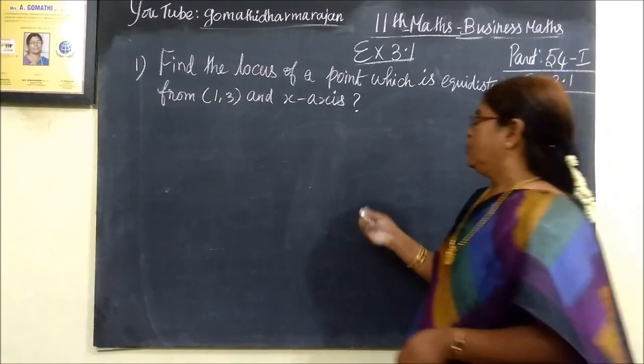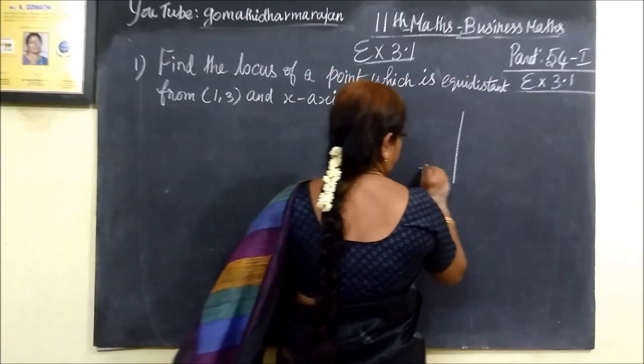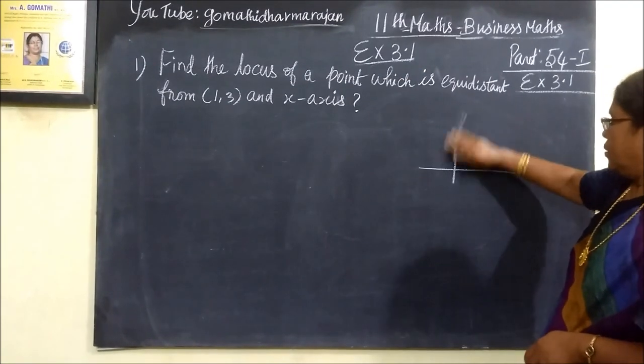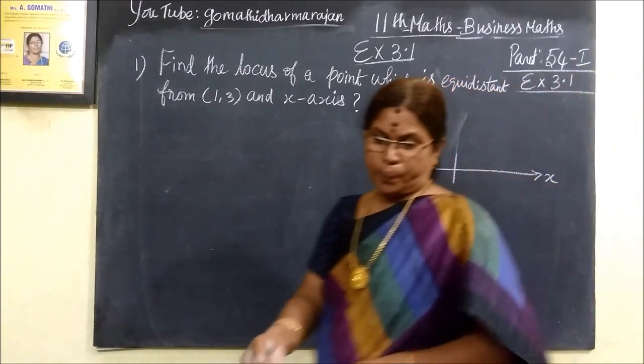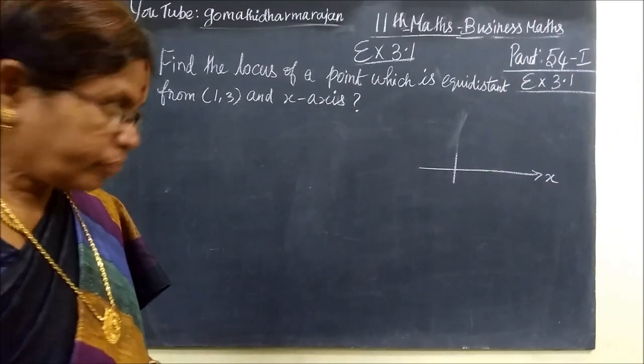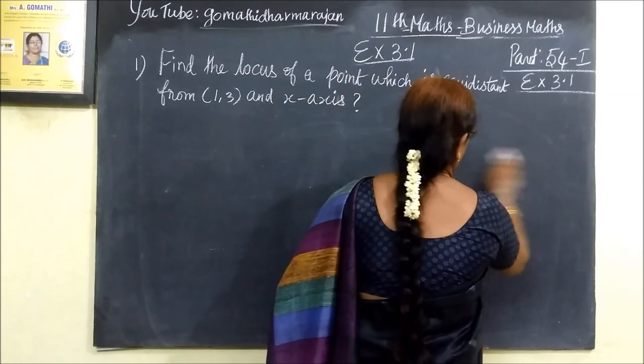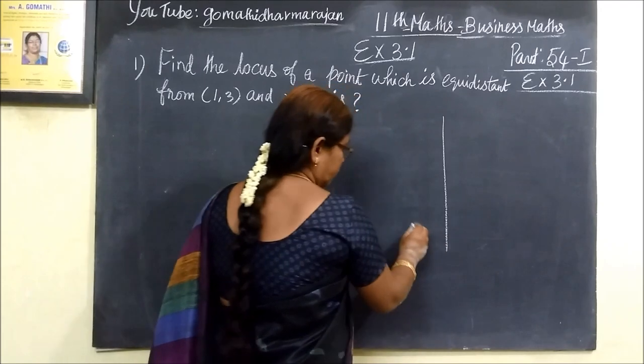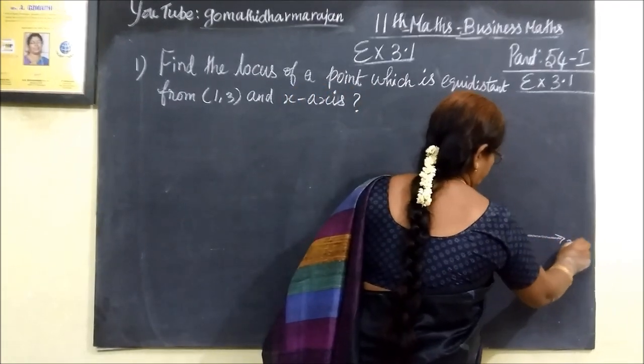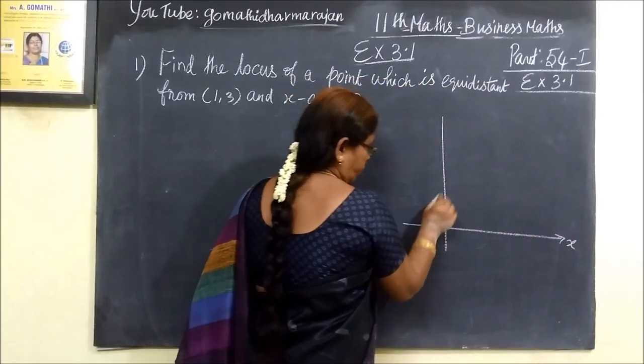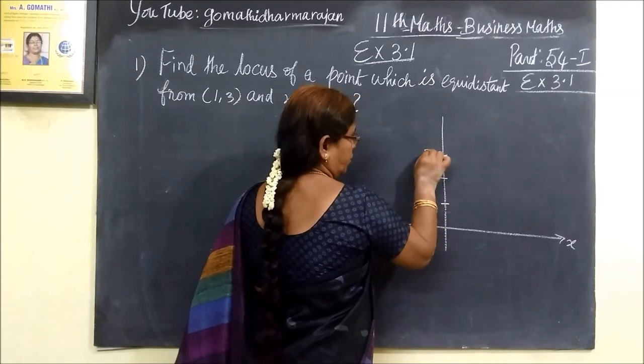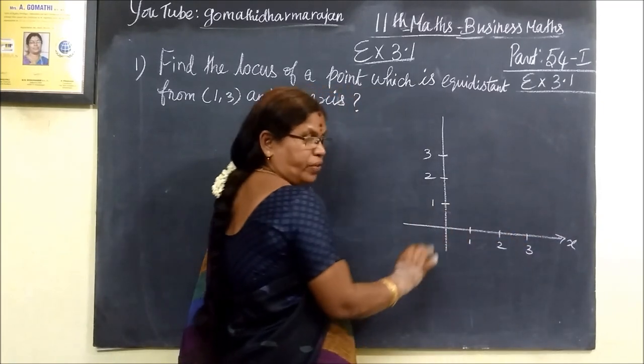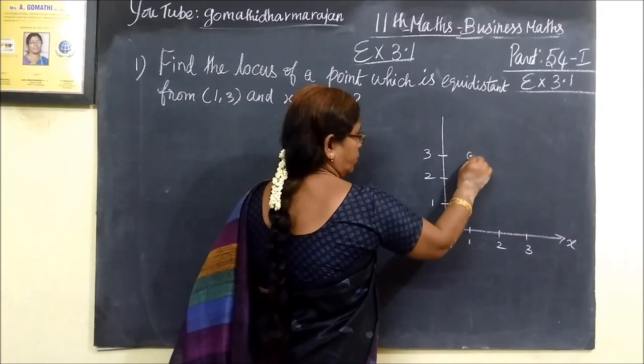It is very simple and no problem. We are given x-axis. This is x-axis. (1,3) corresponds to 1, 2, and 3 on the axes. This is 1, 2, 3.